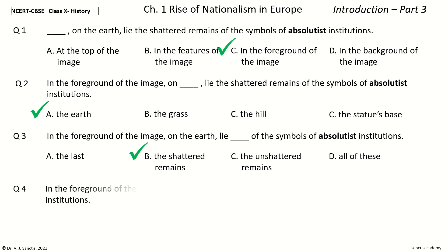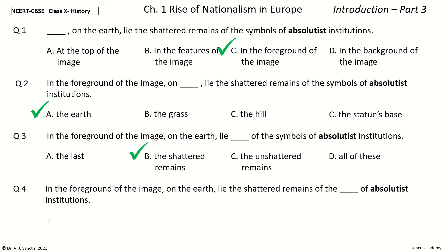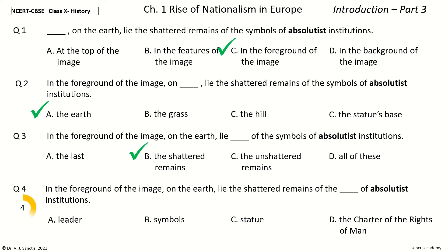Question four: In the foreground of the image, on the earth lie the shattered remains of the ___ of absolutist institutions. The options are: symbols, statue, the charter of the rights of man. The answer is: symbols.